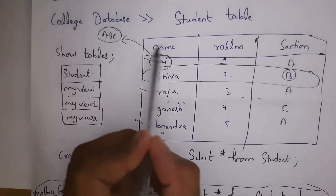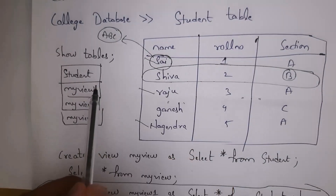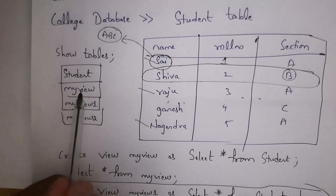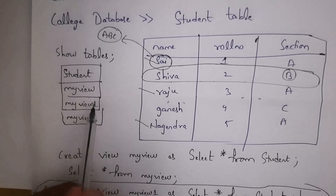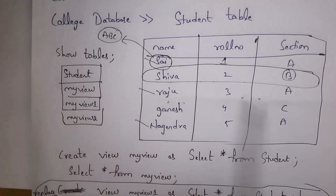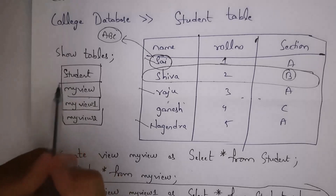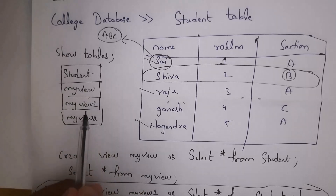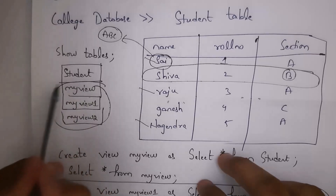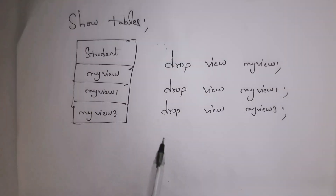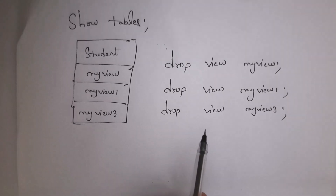For example, in the student table if I change a name from Sai to ABC, whatever changes you make to the main table are automatically reflected to all the views, because we created these views using the student table. So if you change any data in the student table, it is automatically updated in all views — my_view, my_view_1, and my_view_2 will all show name ABC instead of Sai.